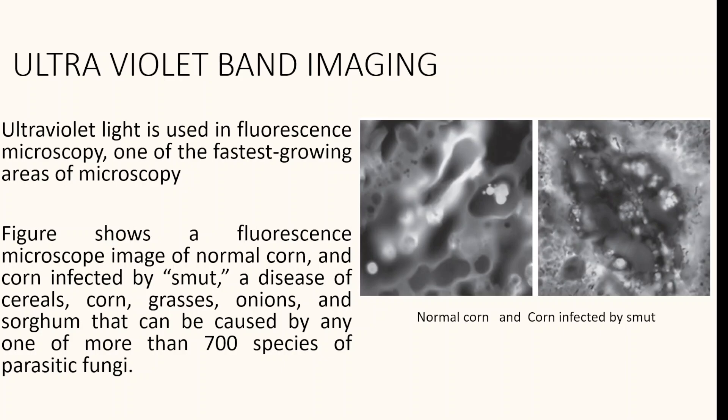Applications in the ultraviolet band include industrial applications, microscopy, biological imaging, and astronomical observations. Ultraviolet light is used in fluorescence microscopy, one of the fastest growing areas of microscopy. When a photon of ultraviolet radiation collides with an electron in an atom of fluorescent material, it elevates the electron to a higher energy level. The excited electron then relaxes to a lower level and emits light as a lower-energy photon in the visible light region. Fluorescence microscopy is used for studying materials that can be made to fluoresce. This figure shows a fluorescence microscope image of a normal corn and a corn infected by smut.